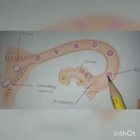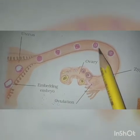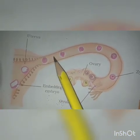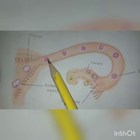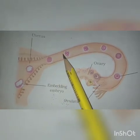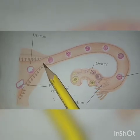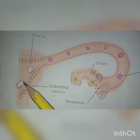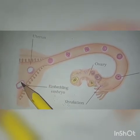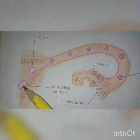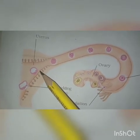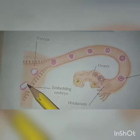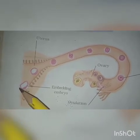You can see the zygote — a single cell zygote — then the two cell stage, then four cell, eight cell. Then it becomes a mass of cells. As it moves towards the uterus, it develops into an embryo. The embryo will be embedded — that means attached — on the walls of the uterus. So the development of the embryo takes place inside the uterus.